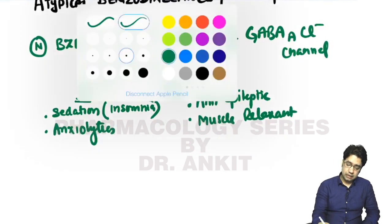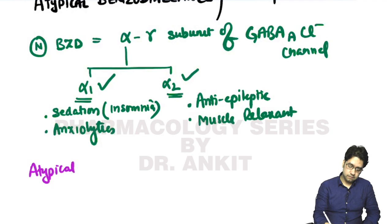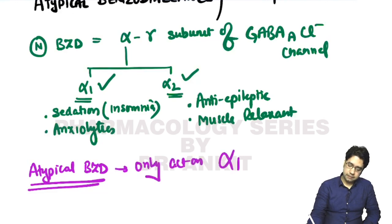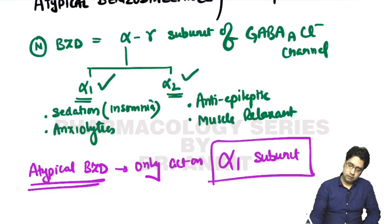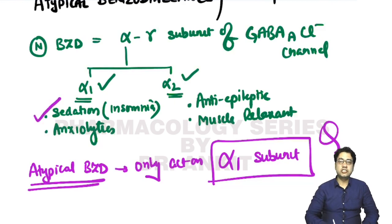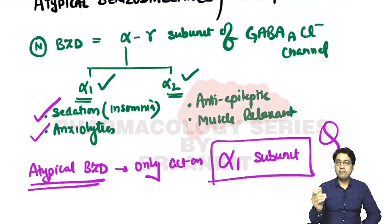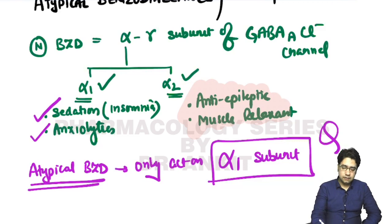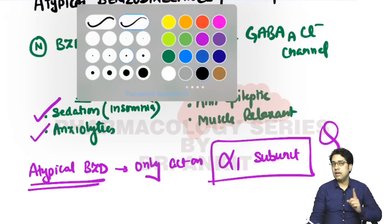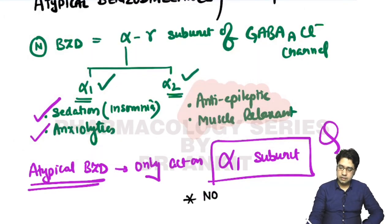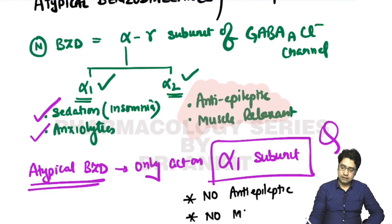Atypical benzodiazepines only act on the alpha-1 subunit. Therefore they produce sedation and are used for insomnia, and they also reduce anxiety. However, they do not have anti-epileptic or muscle relaxation properties because they do not act on alpha-2 subunit neurons.